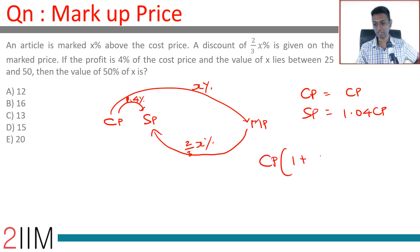CP times 1 plus x by 100 times 1 minus two-thirds of x by 100. Remember this discount is on mark price, this markup is on cost price, profit is a percentage of cost price.